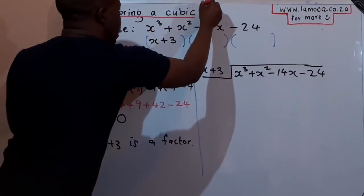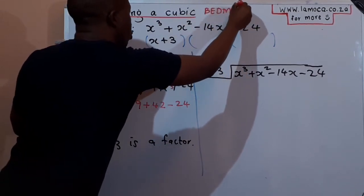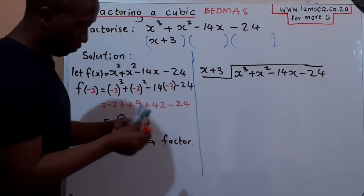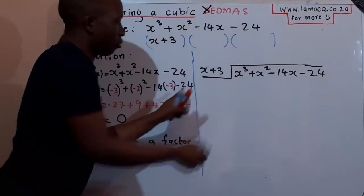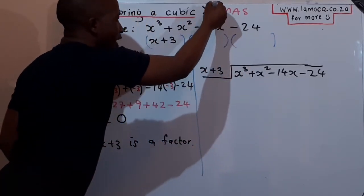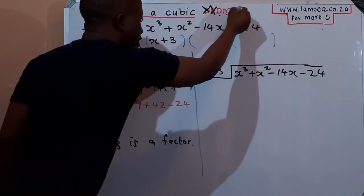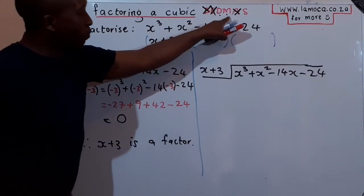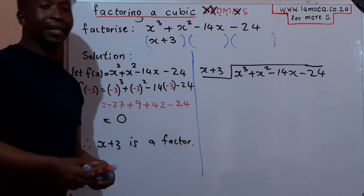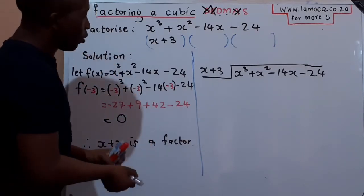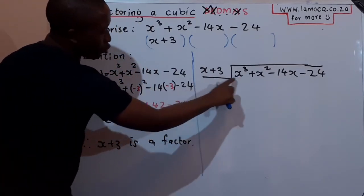In the long division method, I'm using what I call BEDMAS — specifically the DMS part: divide, multiply, subtract. I repeat that cycle — divide, multiply, subtract — until I'm done dividing the entire expression.